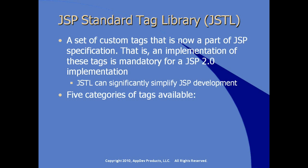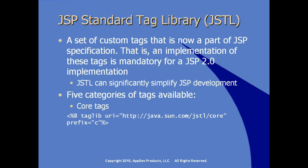There are five categories of tags available. First are the core tags. The URI is what's important here, and traditionally the prefix for the core tags is C. You see here a reference to the tag library description at java.sun.com. We use the taglib directive — the JSP taglib directive — to define that we're using a tag library.